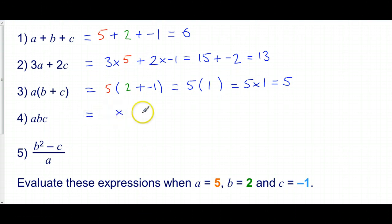On this question, we've got all the letters squashed together, so we've got to do 5 times by 2 times by minus 1. So let's work from left to right. 5 times 2 is 10, 10 times minus 1 is minus 10.